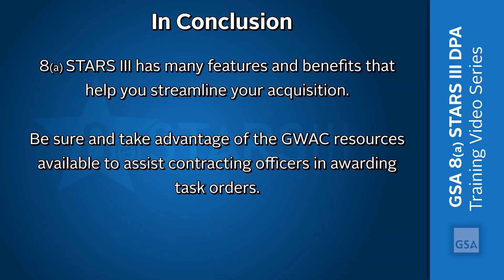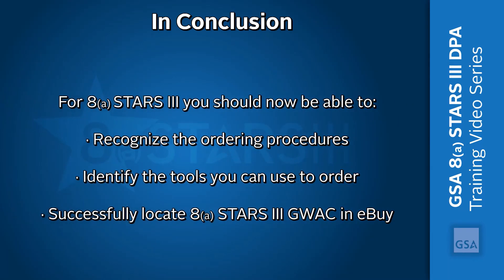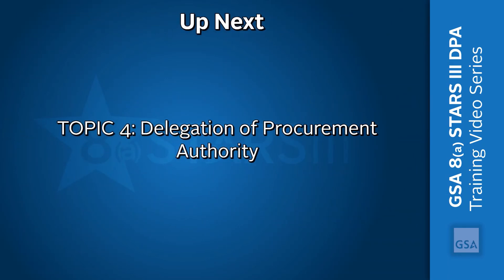Be sure and take advantage of the GWAC resources available to assist contracting officers in awarding task orders. For 8STARS III, you should now be able to recognize the ordering procedures, identify the tools you can use to order, and successfully locate the 8STARS III GWAC in eBuy. Our next video will explain Delegation of Procurement Authority. Please select Topic 4, Delegation of Procurement Authority, to continue with the course.